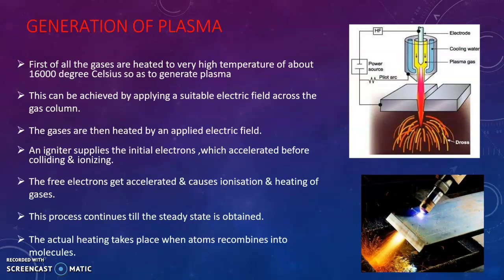In the process of generation of plasma, the gases are initially heated up to a temperature of 16,000 degrees Celsius, and this is achieved by applying a high potential electric field between the workpiece and the electrode. A pilot arc is provided which supplies the initial electrons to start the process. By heating this gas, the outermost electrons of an atom get separated and these move at a higher velocity along the gases.